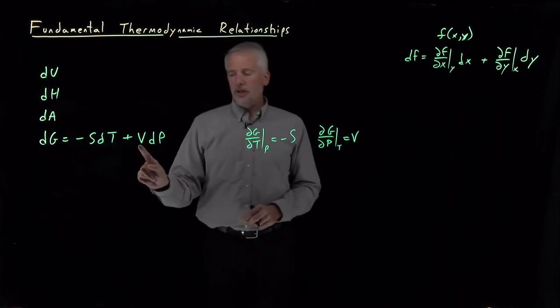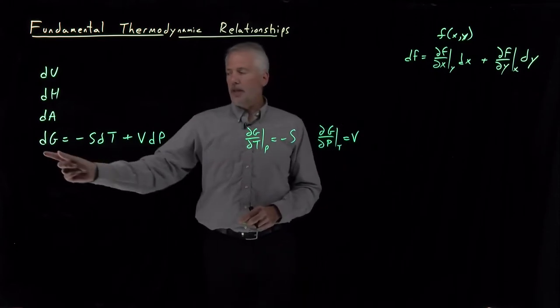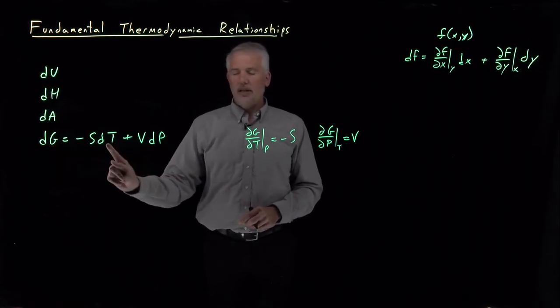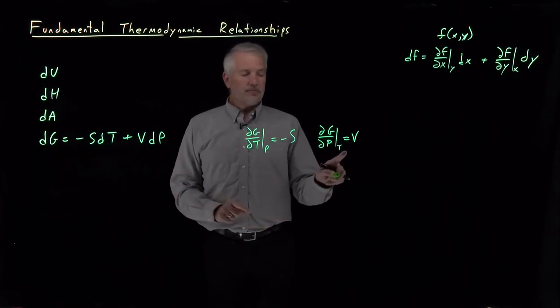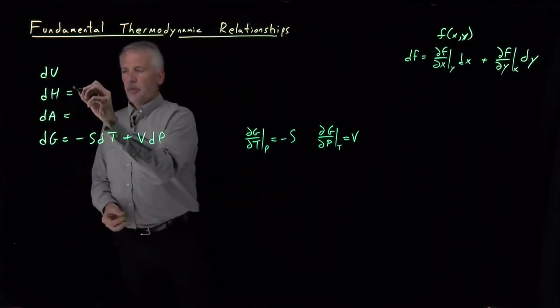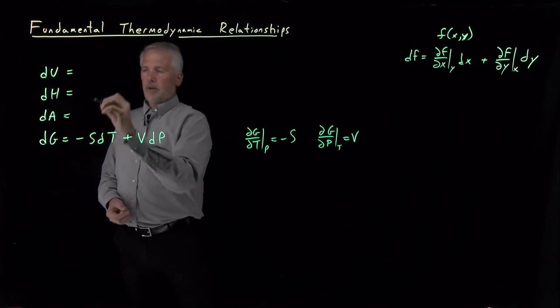Likewise, the coefficient here in front of the dp must be the rate at which g is changing with respect to p, the pressure. So dG/dP at constant T is equal to volume. For each of these fundamental equations that we have seen, writing those down: